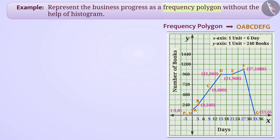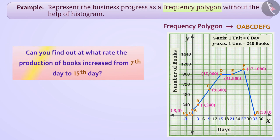By looking at this frequency polygon, we can get various information like the production of books increased till the 15th day, then remain steady till 21st day, then increased till 27th day and then decreased. Can you find out what rate the production of books increased from 7th day to 15th day? Do discuss it with your friends and find out the answer.